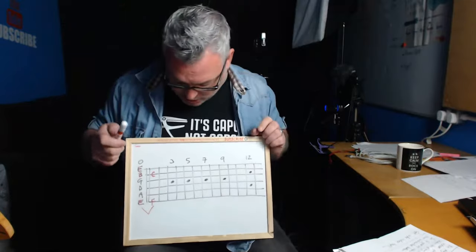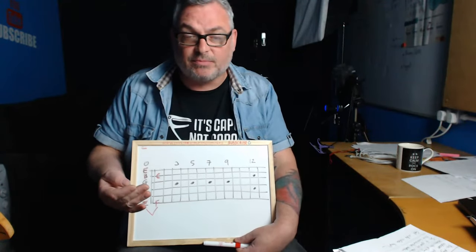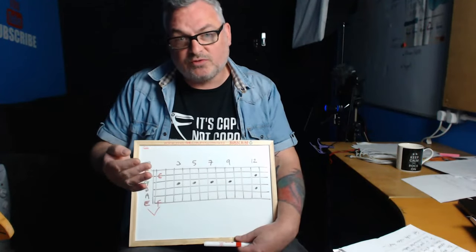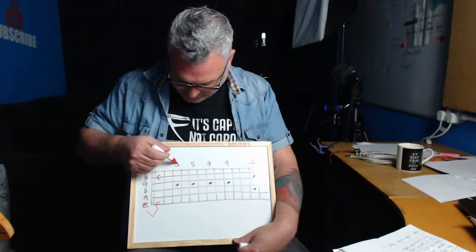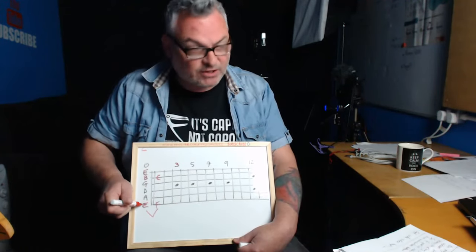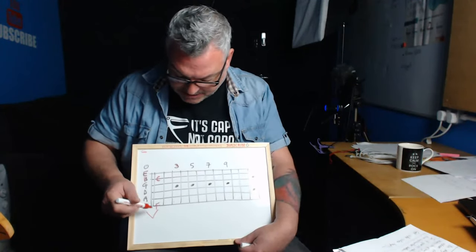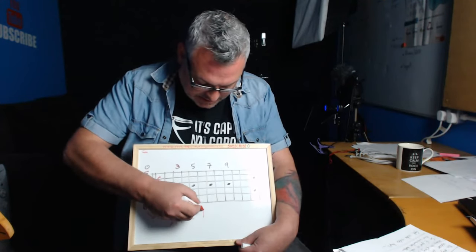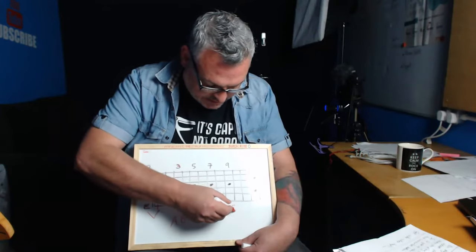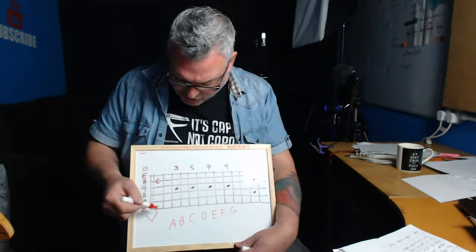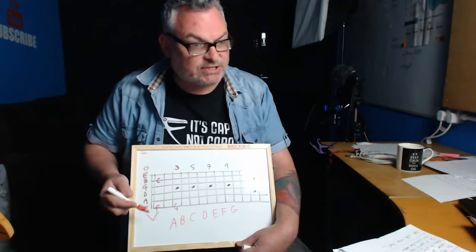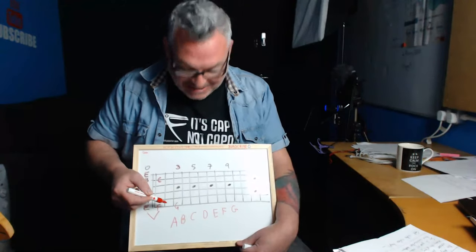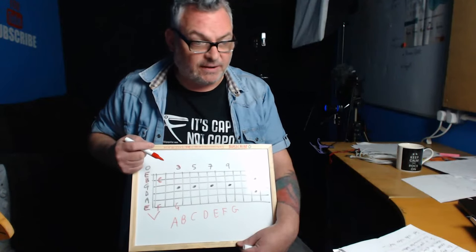The dots on your guitar are there as landmarks, and it's always easier to go somewhere new from somewhere you already know. If you look at the dot at the third fret, and follow the musical alphabet sequence — A, B, C, D, E, F, G — after E and F comes G. So the note at the third fret on the E string is G.